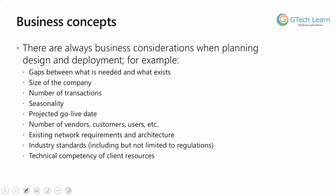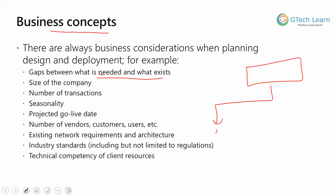The very first thing is identifying the relevant business concepts. There are always business considerations when you're planning your design and deployment. When you talk about identifying those business concepts which are relevant for the implementation, you need to consider a few important concepts that will affect the project — for example, the potential architecture and the needs of the implementations. This includes identifying the gaps between what is needed and what exists, which is the fit gap analysis. There could be existing things which need to be customized, and there can be new elements which need to be added to meet business needs.